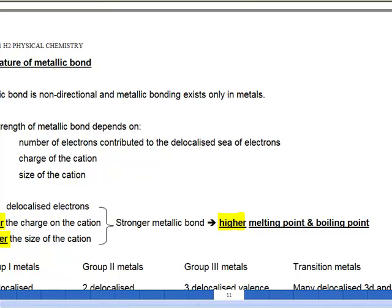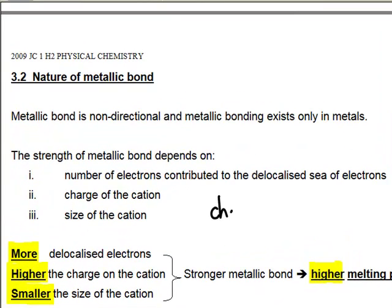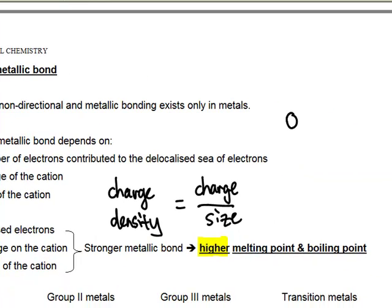So let's use the example of aluminum and sodium to compare. A way to look at the charge and size is to use something we call the charge density which is equivalent to the charge over the size of the cation. So let's look at aluminum which is a relatively small cation compared to sodium plus which is relatively bigger.